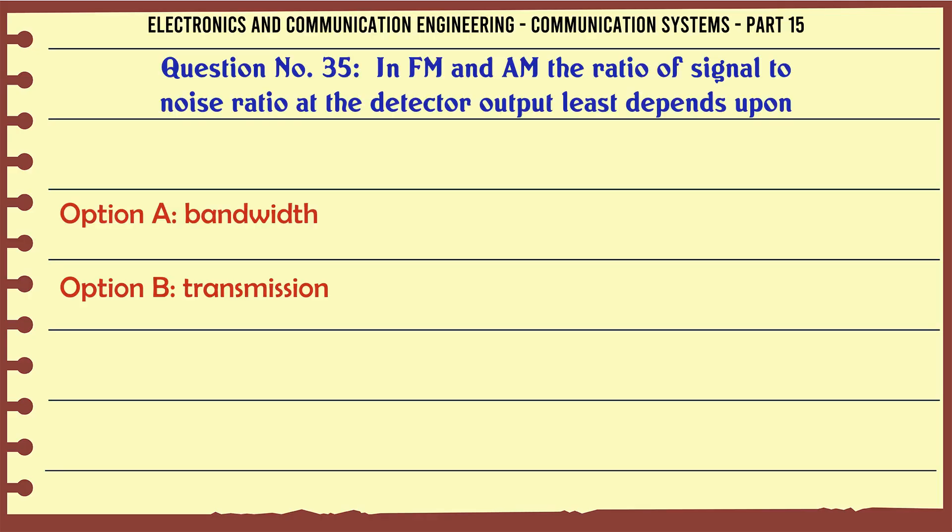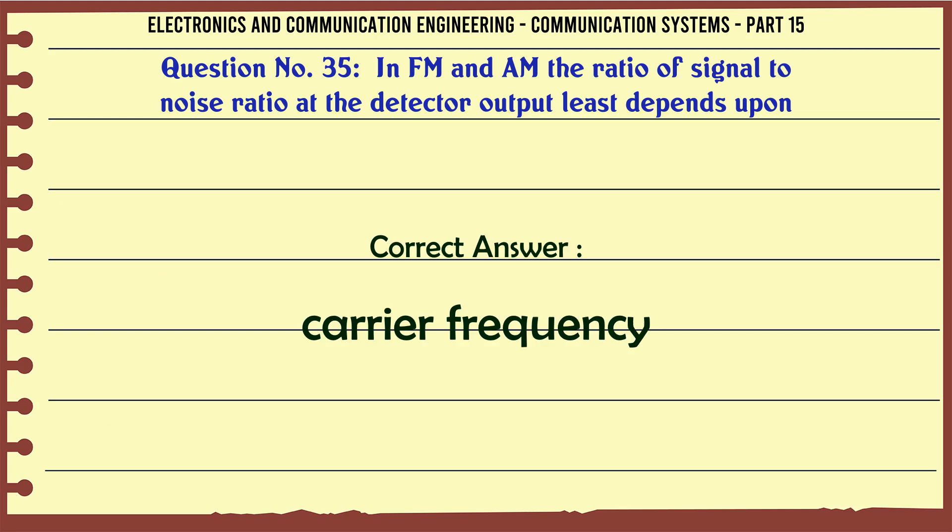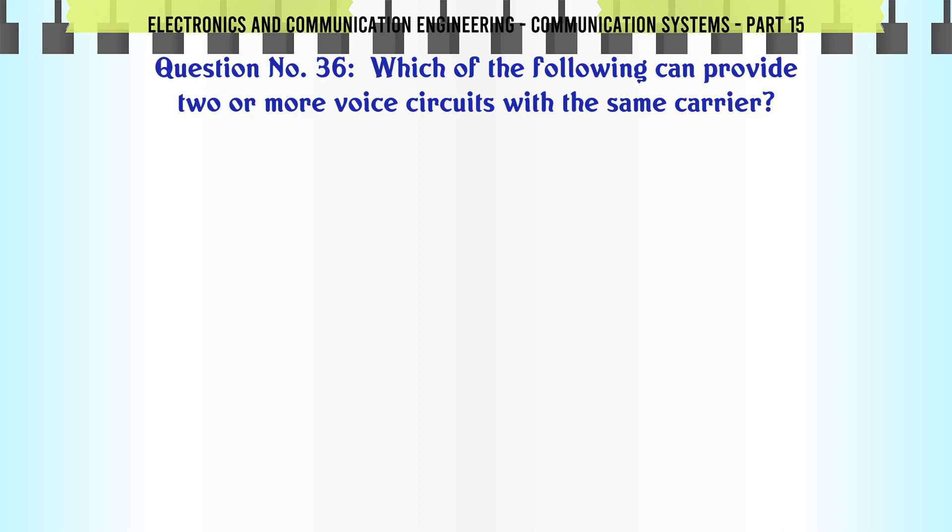In FM and AM the ratio of signal to noise ratio at the detector output least depends upon: A bandwidth, B transmission, C carrier frequency, D modulating frequency. The correct answer is carrier frequency.